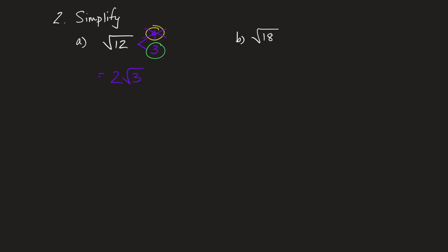When I simplify radicals, I draw a little factor tree off to the side to help me simplify. The other reason I really like using factor trees is because there's no pressure. What I mean by that is, for anybody who's like, what if I don't factor 12 the perfect way? Well, there's no pressure. Worst case is it's just going to take you a little more time, but it's not going to lead you down a bad path.